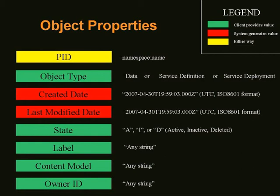You have a label for the object that can be any string you want. There's the content model, which is now reflected in the REL-EX data stream. There's also an owner ID — you don't necessarily always want the super user of the repository to be the owner. In configurations where you're supporting faculty activity, you might want them to be the owner of their content with all owner rights. These are all object-by-object properties.